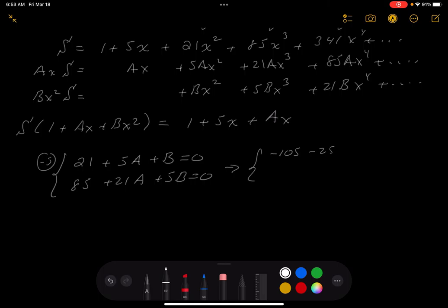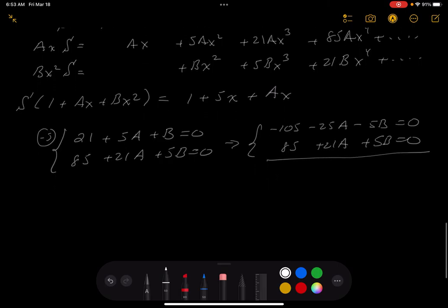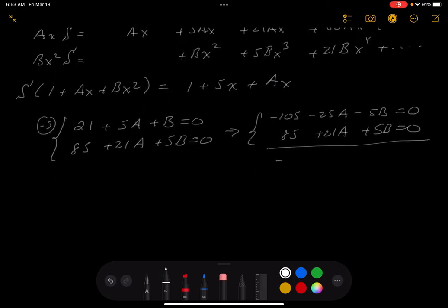Well, let's put this down. 85 plus 21A plus 5B also has to be 0. Well, I'm going to multiply the top equation by minus 5. And what would you get there? You would get minus 105 minus 25A minus 5B equals 0. The second equation, you get 85 plus 21A plus 5B equals 0. I'm going to add these two together. And you're going to get what? You're going to get minus 20 minus 4A equals 0. Well, that doesn't look too bad. So what's A? A would have to be minus 5 for that to be true.